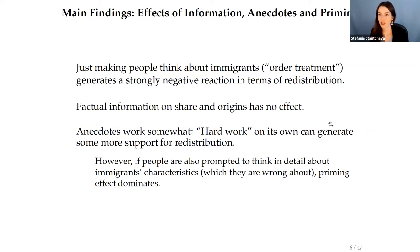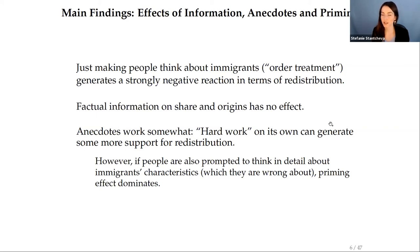Just making people think about immigrants — without any information — makes them less supportive of redistribution, including even private charity donations. This is consistent with the negative baseline views people have of immigrants: priming them to think about immigrants makes them less prone to redistribution. Factual information on either the share or origins of immigrants has no effect and even a negative effect on policy views, suggesting that given substantial baseline misperceptions, those pieces of information alone are not enough to correct negative views. The anecdote about the hard-working immigrant works somewhat, but only for those who see the redistribution block first.